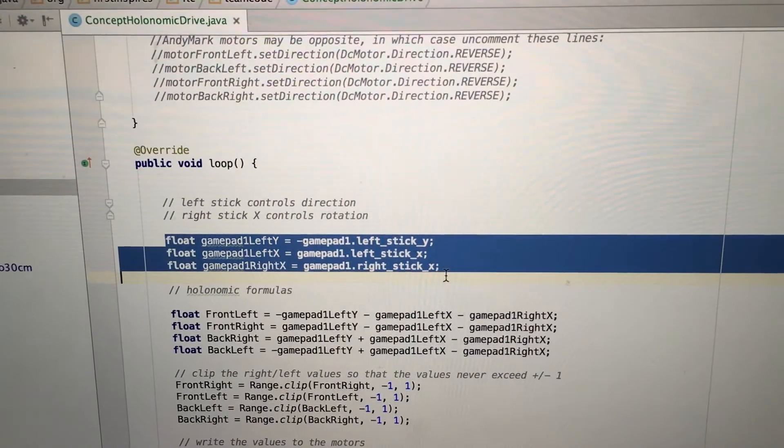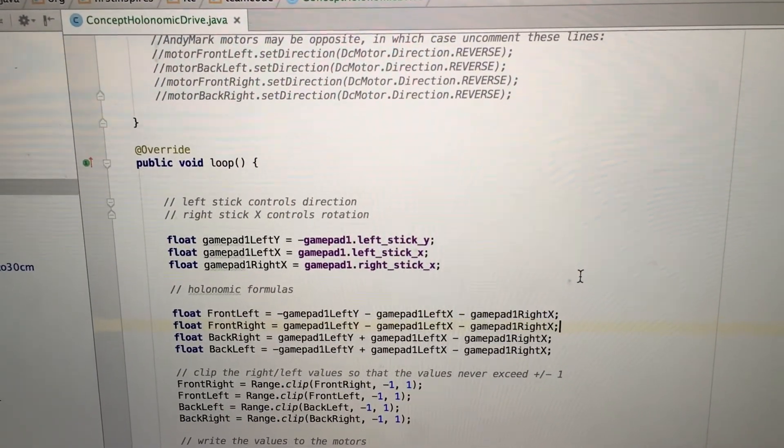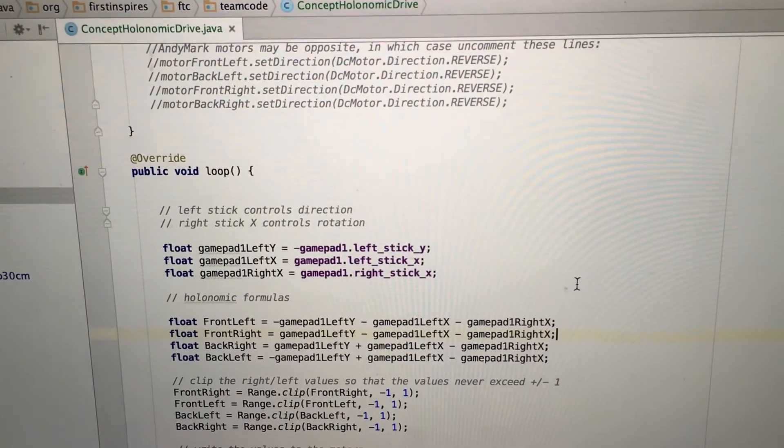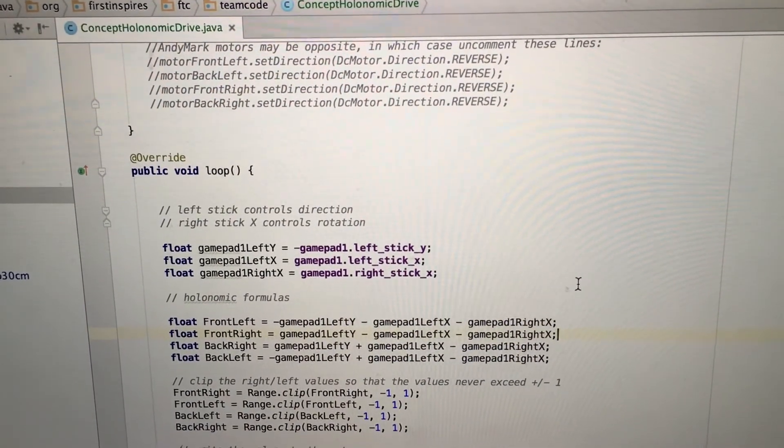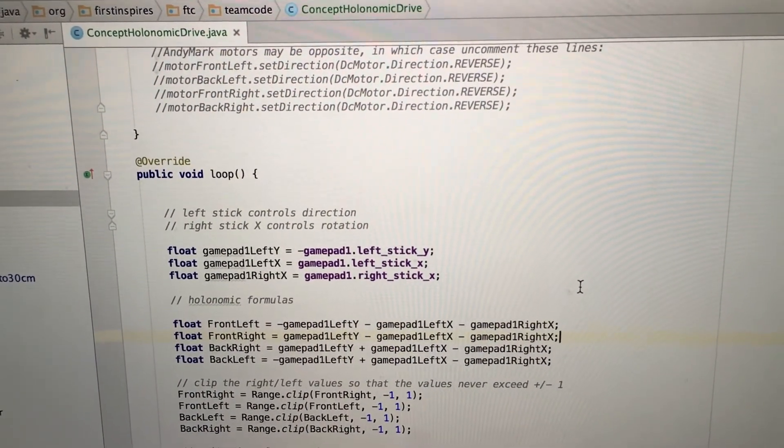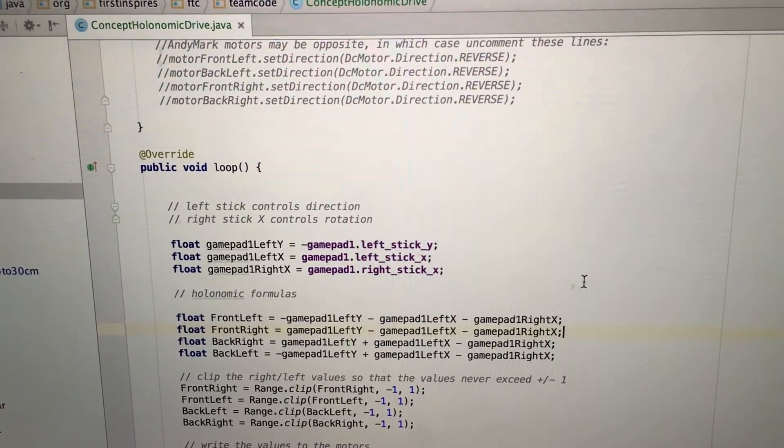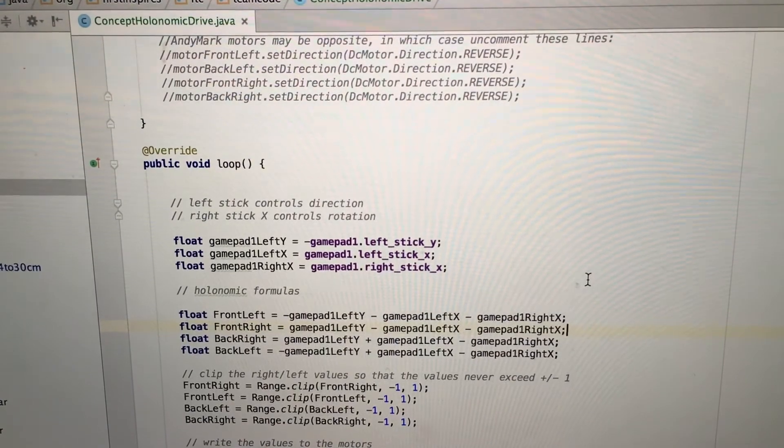The interesting thing about the joysticks is that our left joystick controls the holonomic drive's movement, and the right joystick controls like if you wanted to just spin in a circle. For that one, it tells all the motors to have the same speed, so it just goes in circles.